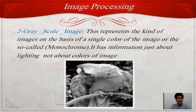The second one is grayscale image. This represents images on the basis of a single color, also called monochrome. It has information just about lighting, not about colors of the image.